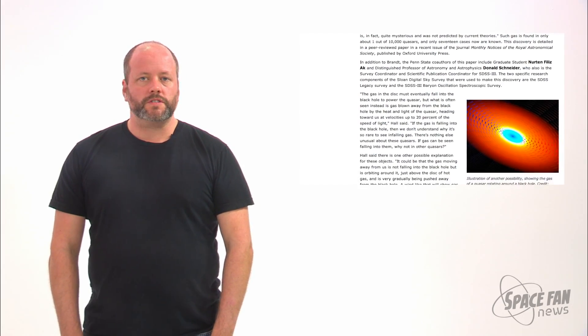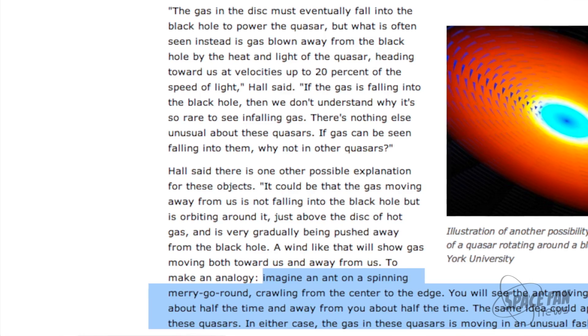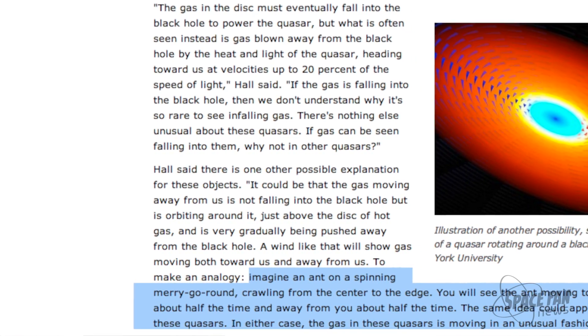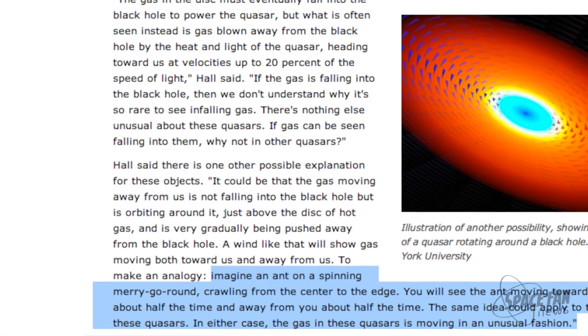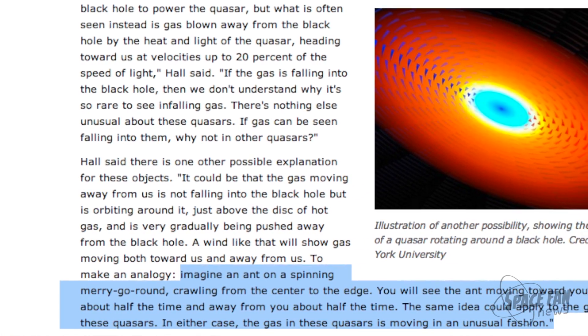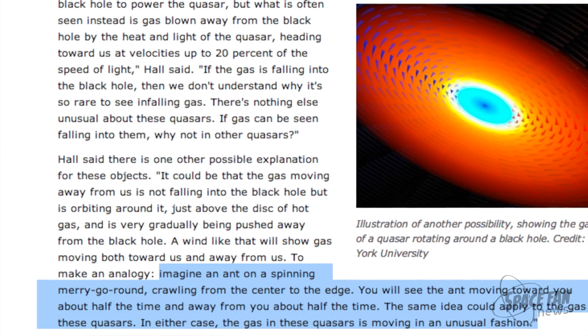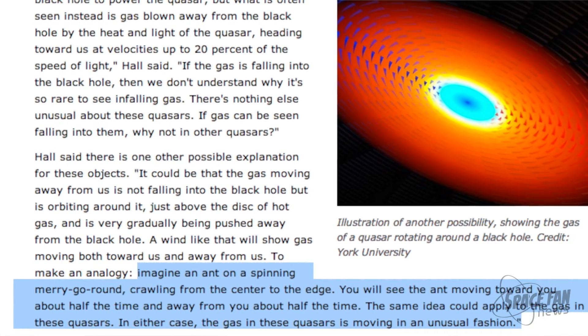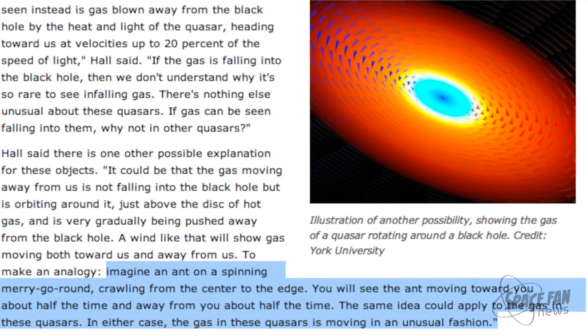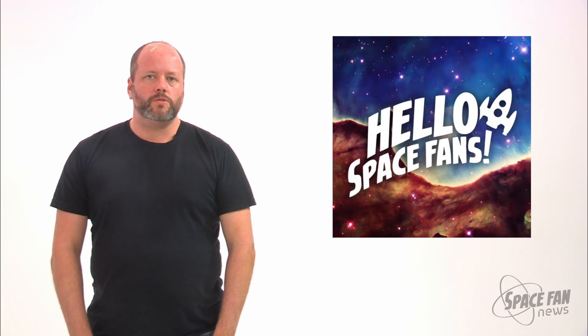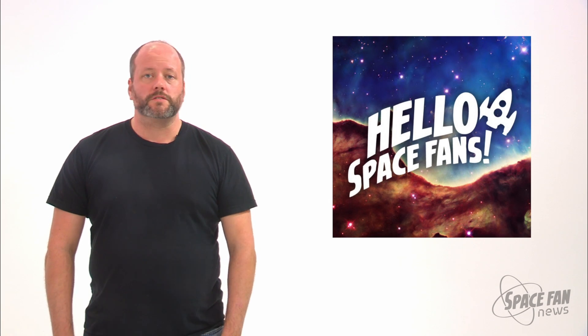The leader of the research team, Patrick Hall of York University, states that it is possible that the observations are not of the matter heading into the black hole, but slightly above it. He uses this analogy to explain the concept. Imagine an ant on a spinning merry-go-round crawling from the center to the edge. You'll see the ant moving towards you about half the time, and away from you about half the time. The same idea could apply to the gas in these quasars. In either case, the gas in these quasars is moving in an unusual fashion.